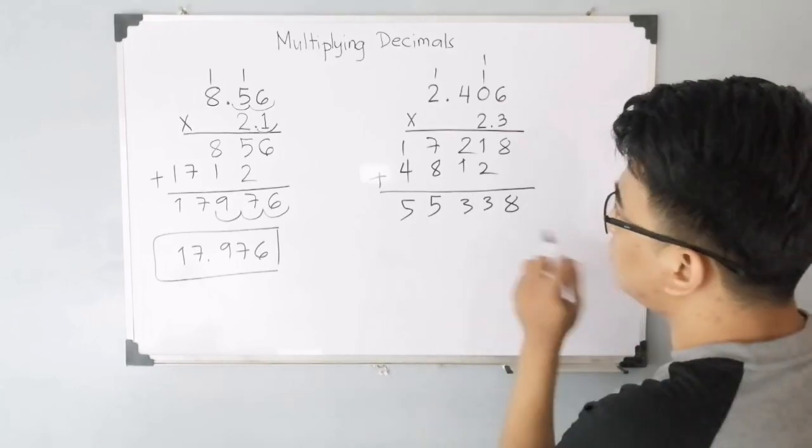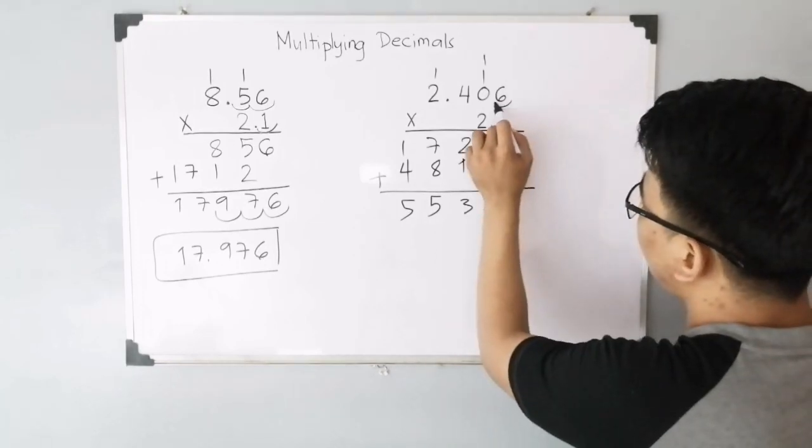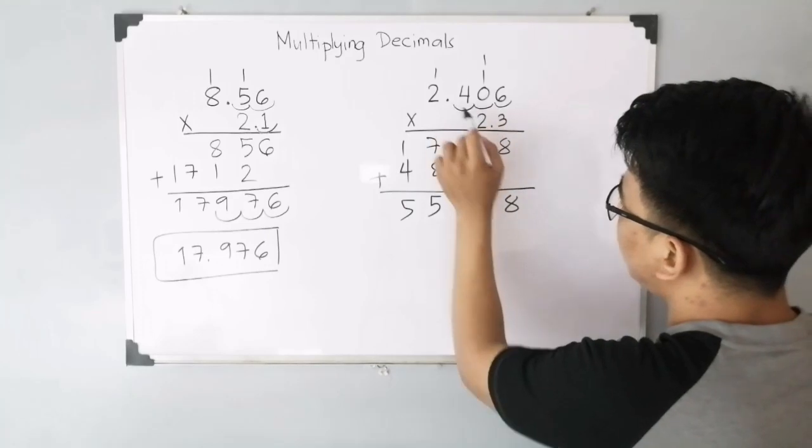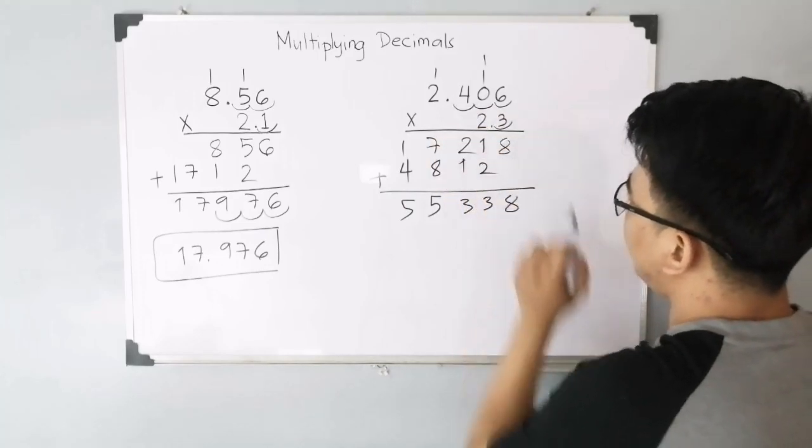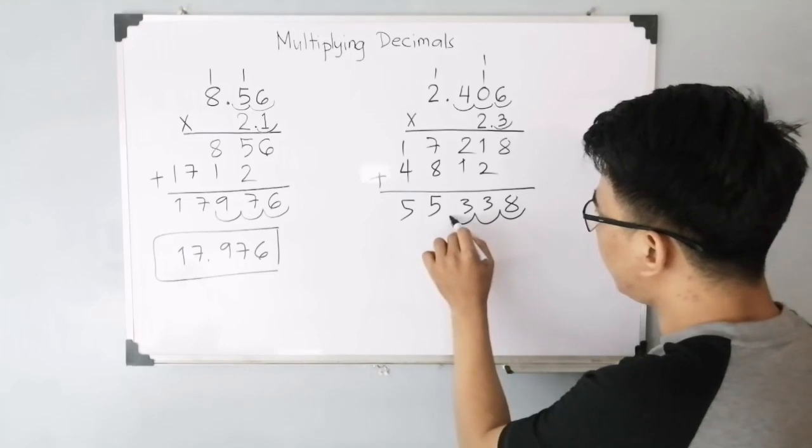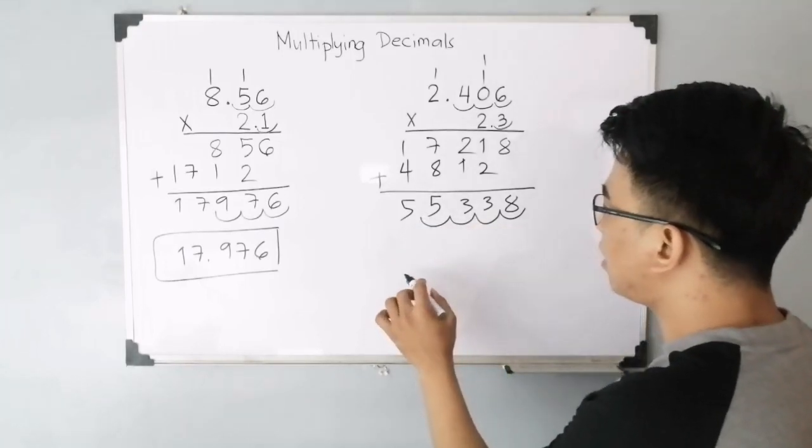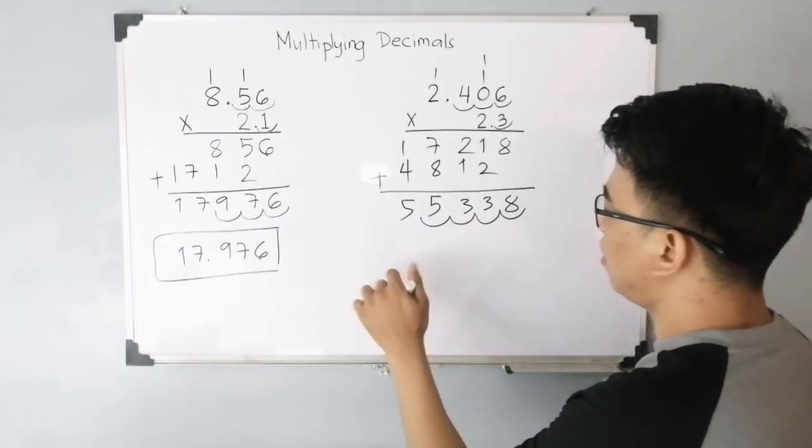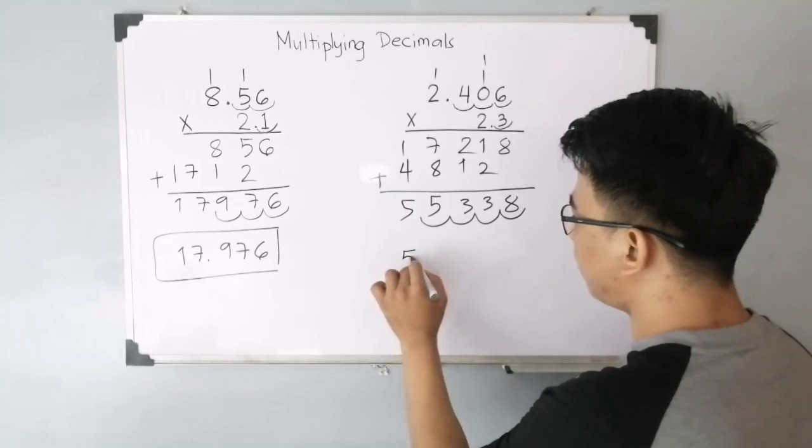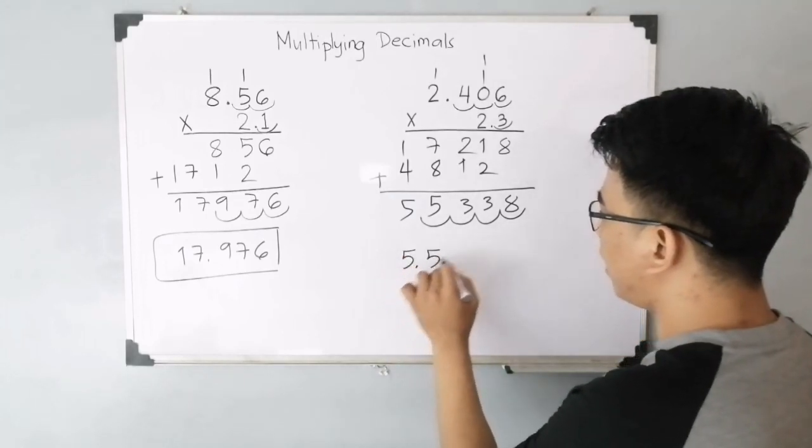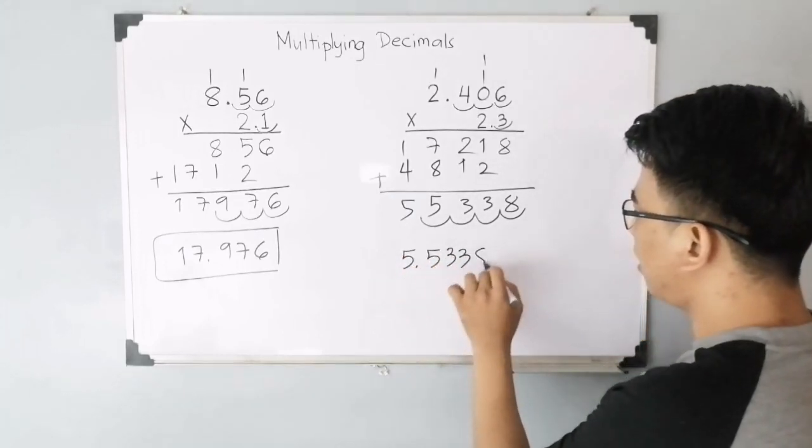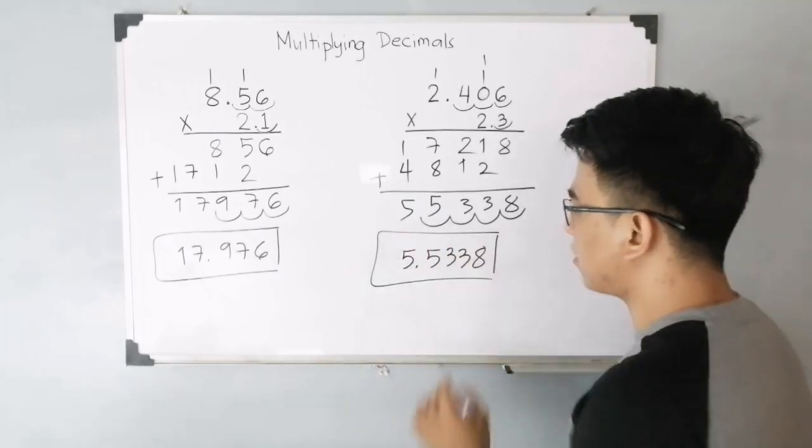So, lastly, count our decimal places. We have 1, 2, and 3. And this is the fourth. So, we have 1, 2, 3, 4 decimal places. Meaning, the product of our fourth example is simply 5.5338. This is the correct answer.